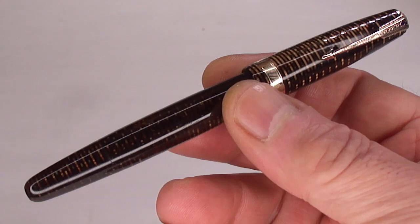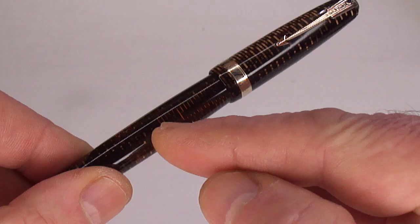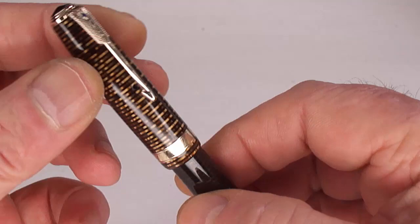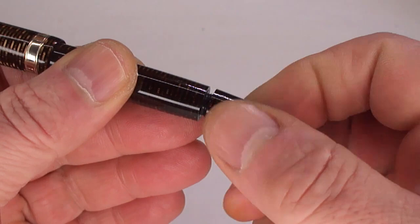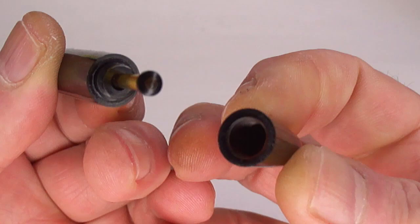The size of the pen from the top of the cap to the bottom of the barrel is 130 millimeters capped. Around the barrel it's a nice 12 millimeters in diameter. At the bottom here we've got this end cap.